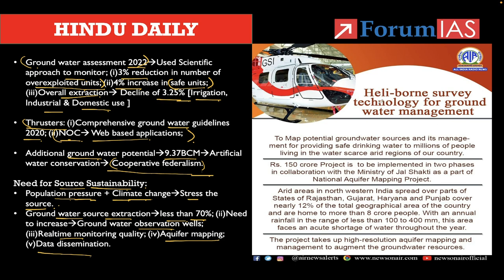Let us discuss a few basics about the heliborne survey technology used in national aquifer mapping — to map the potential of groundwater sources and its management for providing safe drinking water to millions in water-scarce arid regions. It is a 150 crore project operating under the Ministry of Jal Shakti. The arid regions of northwestern India spread over Rajasthan, Gujarat, Haryana, and Punjab — almost 10% of the geographical area — have been covered under the heliborne survey. These areas have rainfall between 100 to 400 millimeters. This project will lead to high-resolution pictures aiding states in taking conservation measures.